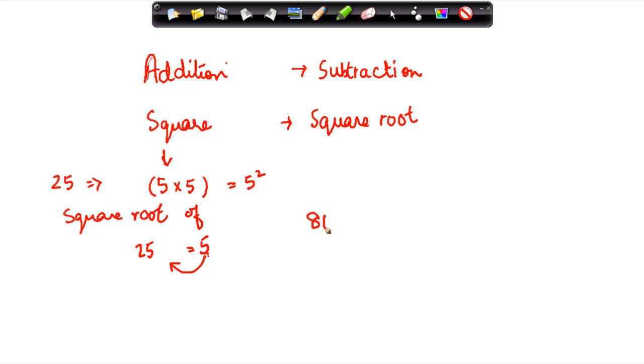Suppose you have 81. Now 81 can be written as 9 into 9 and 81 can also be written as square of 9, 9 square right. So 9 square is equal to 81, we can say that the square root of 81 is equal to 9.